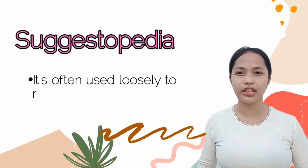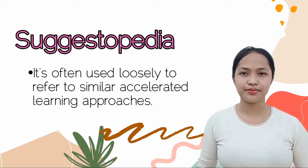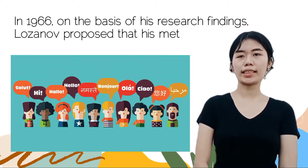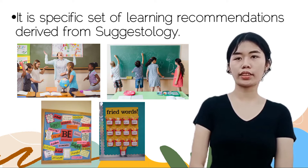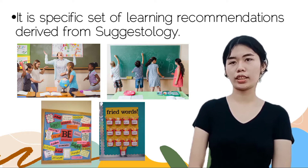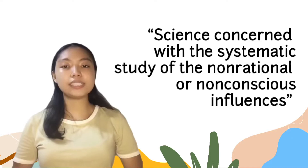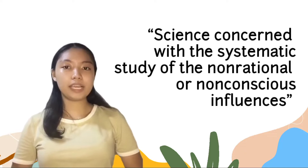Suggestopedia is derived from the words suggestion and pedagogy, and it is often used loosely to refer to similar accelerated learning approaches. In 1966, based on his research findings, Lozanov proposed that his method could accelerate foreign language learning. Suggestopedia is derived from suggestology, which Lozanov describes as a science concerned with the systematic study of the non-rational or non-conscious influences that human beings are constantly responding to.